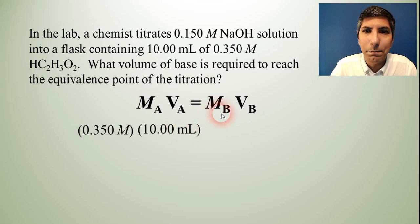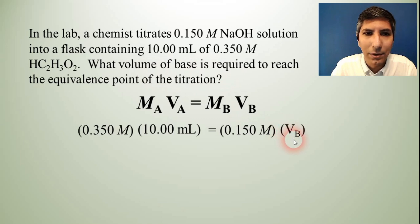And then M sub B is the molarity of the base. That's given to us in the problem. The base is sodium hydroxide. So that's 0.150 molar. And then volume of the base, VB, that's what we're solving for. It asks us what volume of base is required. So that's our unknown.